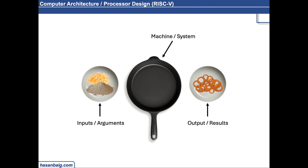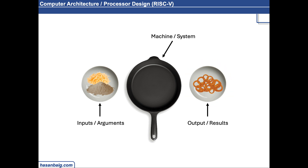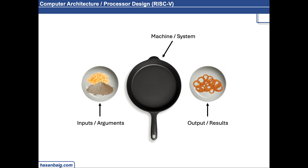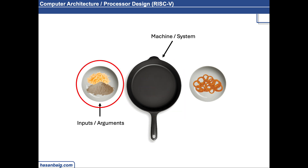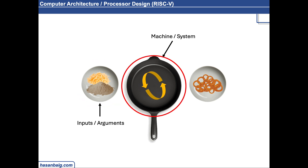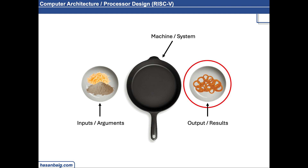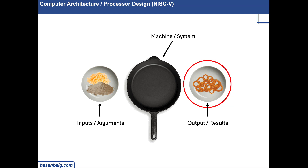The function returns an output. So where does the function return? It will produce an output and return it in another register. That register is where the rest of the program will be reading the data from. So this is the location where we provide the input. The function — the system, the procedure — takes the input from this location, processes it, and produces an output. That output, which we return from the function, is stored in another register. That is what we call the argument and function registers.